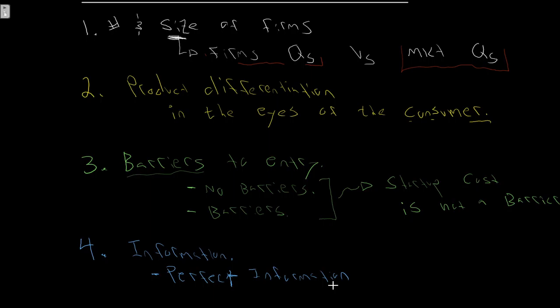From the producer's viewpoint, perfect information means all technology is shared. If Farmer George finds some new great way to make apples cheaper or better, Farmer Brown also has access to that information and is able to implement it himself. So perfect information means information is perfectly, readily, and completely transmitted between all economic agents without any cost and without any asymmetry.